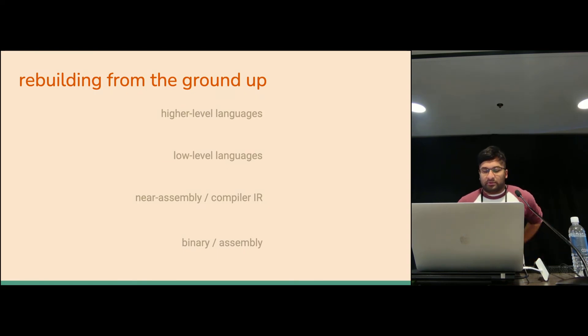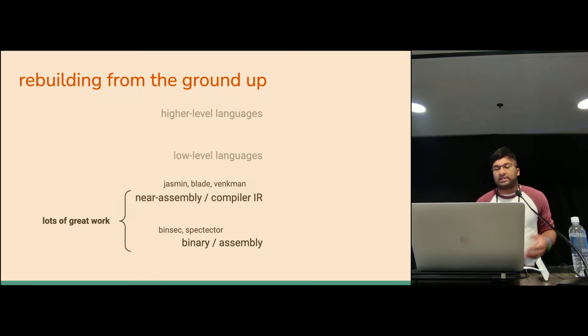We really want to try to rebuild security kind of from the ground up. We have the work at the bottom. There's been lots of great tools that are looking at binary and assembly, works like BINSEC and Spectre. And slightly above that, tools like Jasmine, which operates on a sort of structured assembly, and Blade and Venkman, which operate on LLVM IR, which analyze programs and can compile them down to the binary level and ensure that they're free from Spectre attacks. And going one level higher, we have tools like Swivel that can operate on slightly more structured languages like WebAssembly and make sure that in the translation to one level down, they uphold security from Spectre attacks.